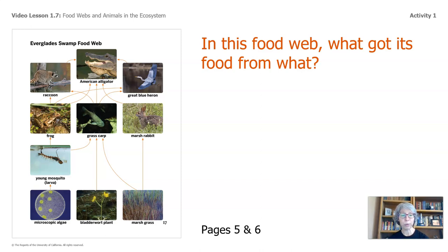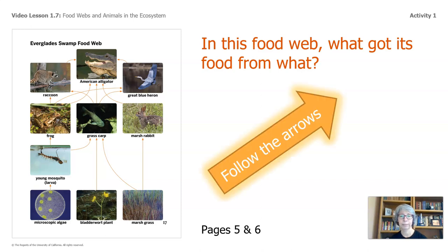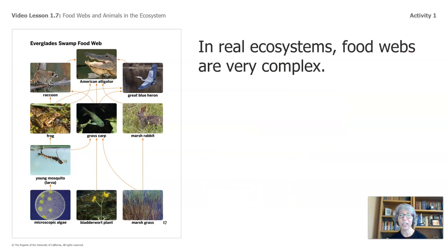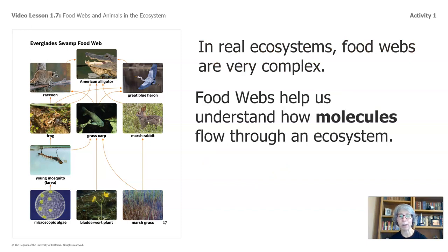Back in the book, we looked at page 17, and we studied the Everglades Swamp Food Web. You can follow along in your packet pages 5 through 6. We have a few questions to ask about this food web that you can record your answers to. In this food web, what got its food from what? Remember to follow the arrows. In real ecosystems, food webs are very complex.